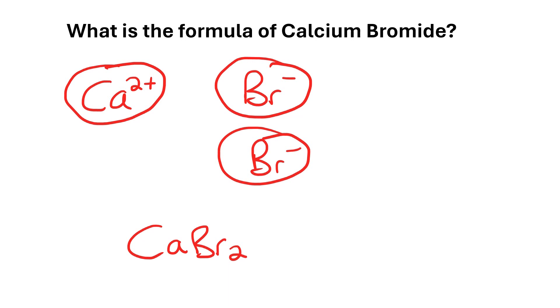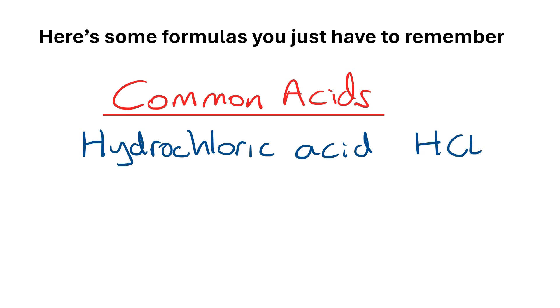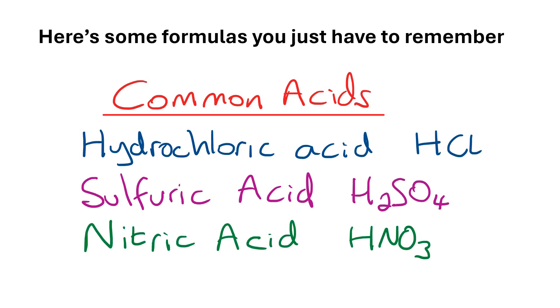Here are some formulas that you just have to remember that will become useful when we're writing ionic equations and symbol equations, but you're not really going to be able to work these out. These are the formulas for common acids. Sulfuric acid is H2SO4 and nitric acid is HNO3. Come back to these in an hour and test yourself. Can you still remember these? Check again tomorrow. Can you still write down the formulas of these three acids?